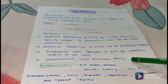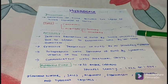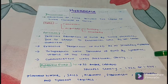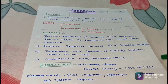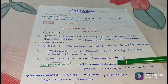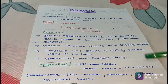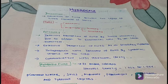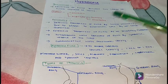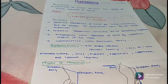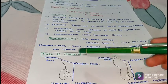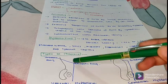Hydrocele fluid is amber colored. Specific gravity is 1.022 to 1.024. It contains water, salt, albumin, fibrinogen, cholesterol, and tyrosine crystals. Next, coming to the types of hydrocele — it may be vaginal hydrocele.